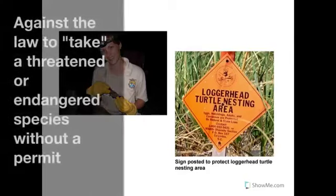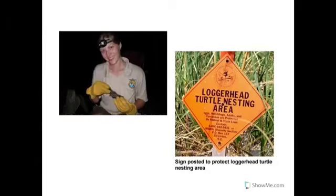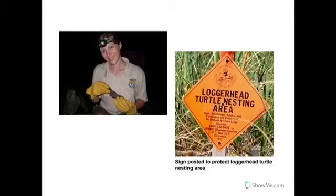These agencies work hard to protect threatened and endangered species — it's part of the act, so it's against the law to take a threatened or endangered species without a permit. Taking includes a broad range of actions: you cannot harass, harm, pursue, hunt, shoot, wound, kill, trap, capture, or collect an endangered or threatened species. For example, a whale watching boat couldn't pursue certain types of endangered whales, as it might interfere with their normal behaviors.